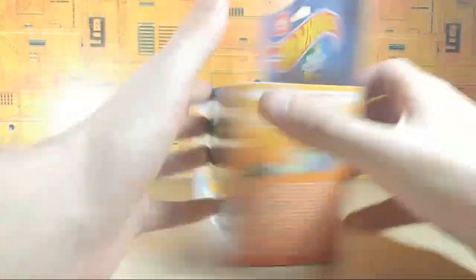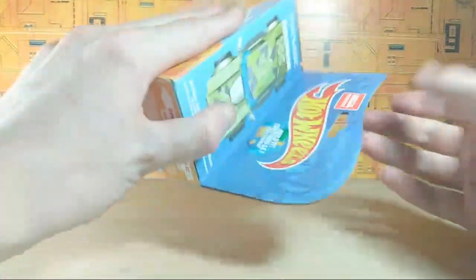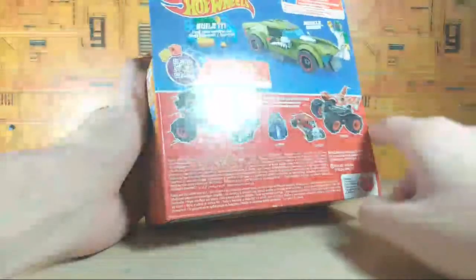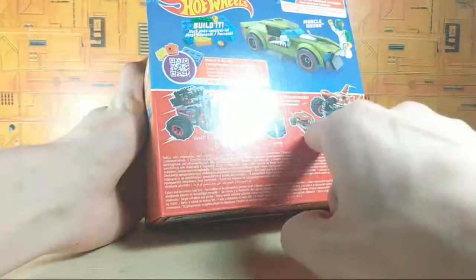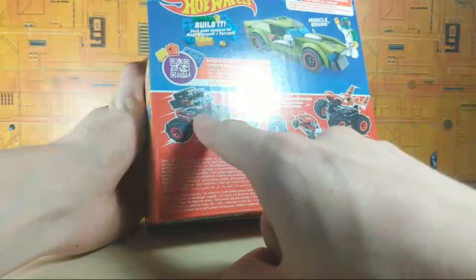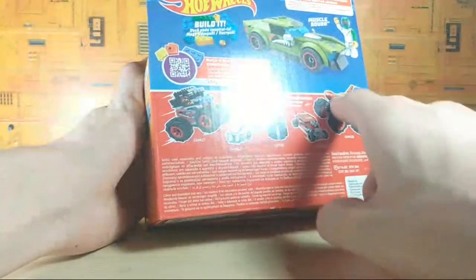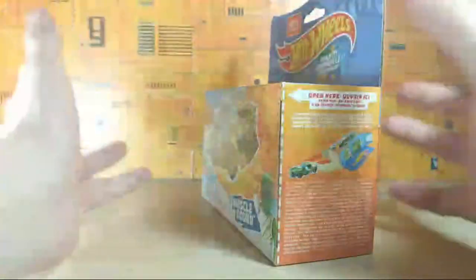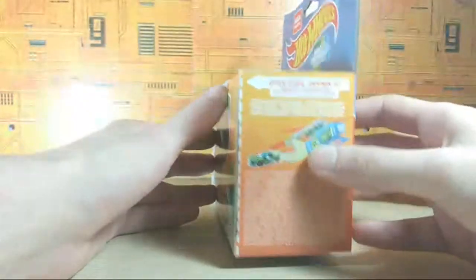Pretty thick packaging too. Like this isn't going to get damaged except for the corner here. And there's a bunch of other cars. I want the Twin Mill. The Bone Shaker looks cool. And I can't remember exactly what this is. That's a Bone Shaker muscle truck. That is some sort of shark thing.